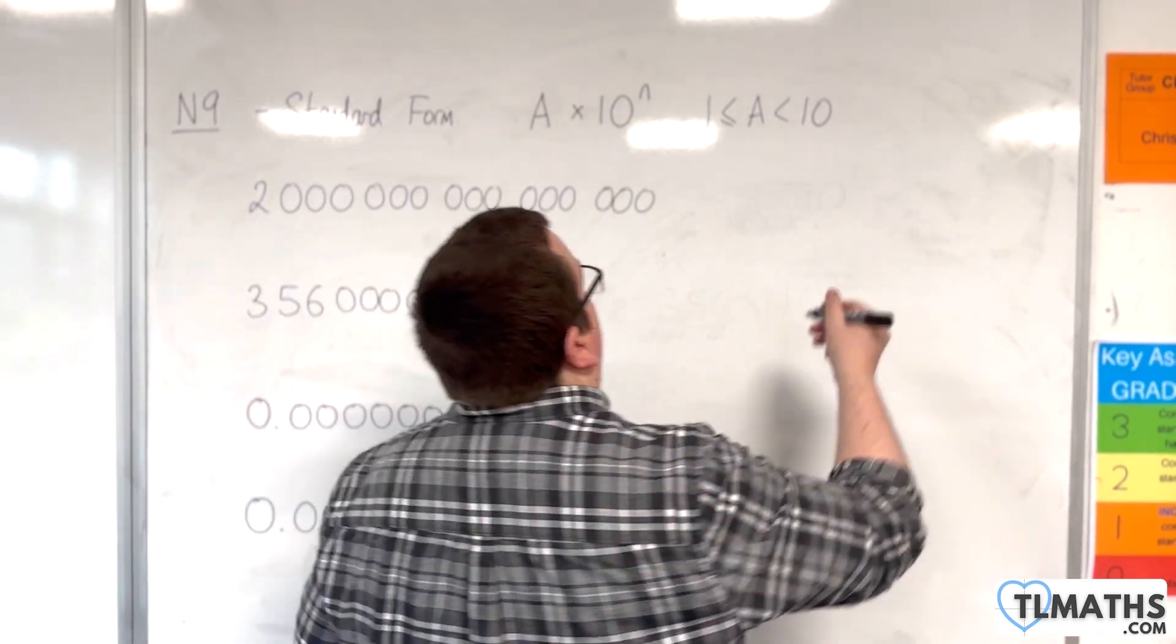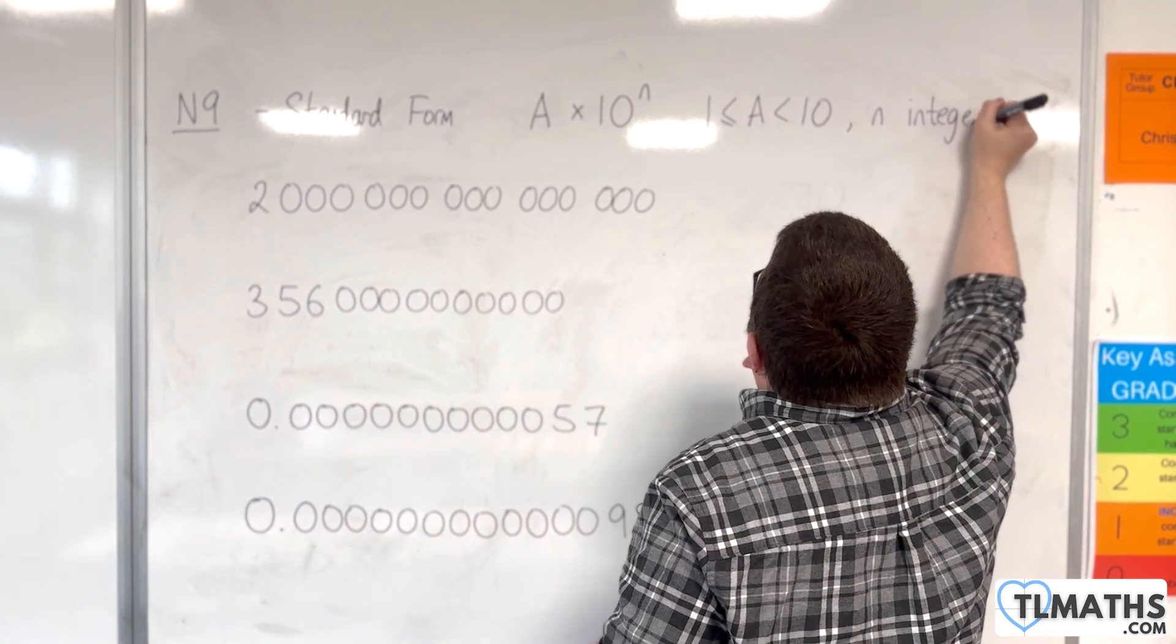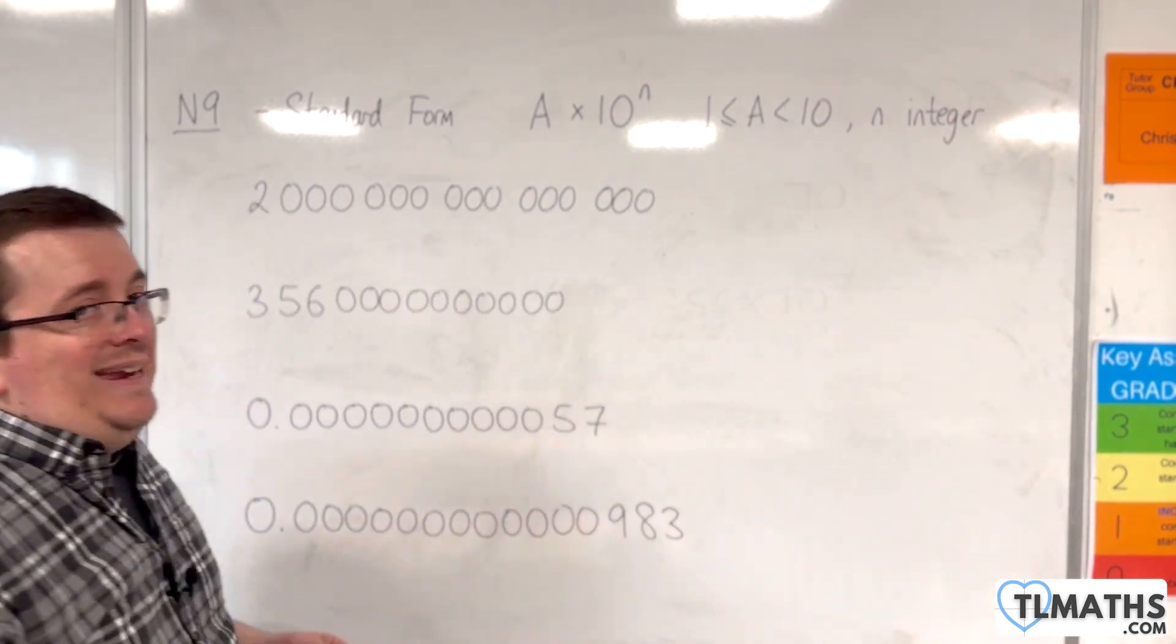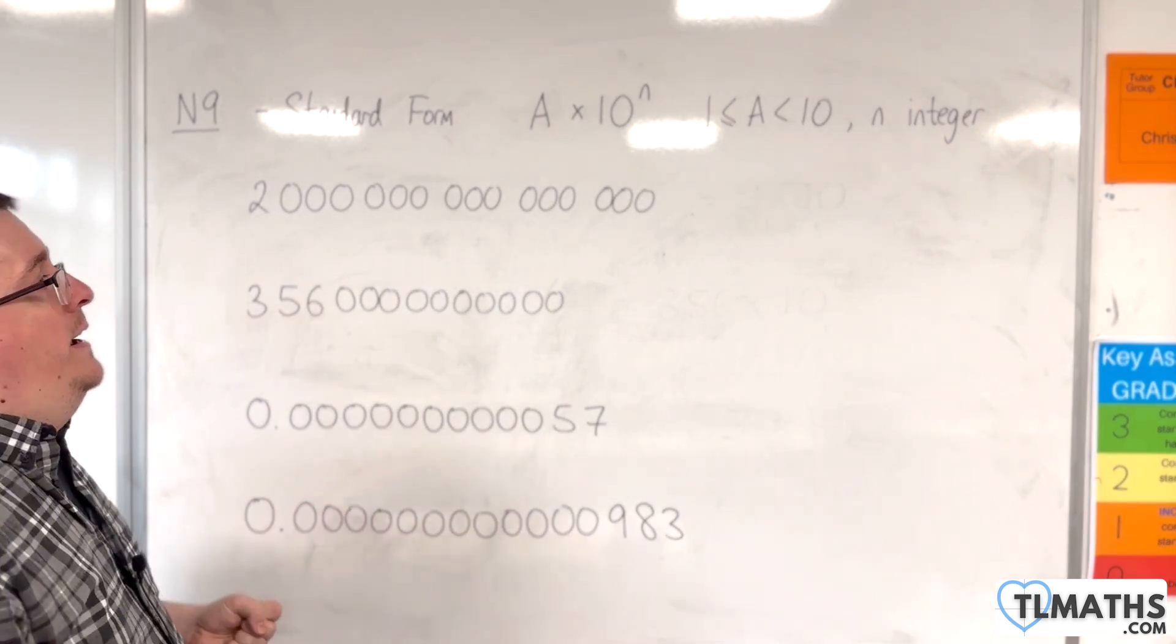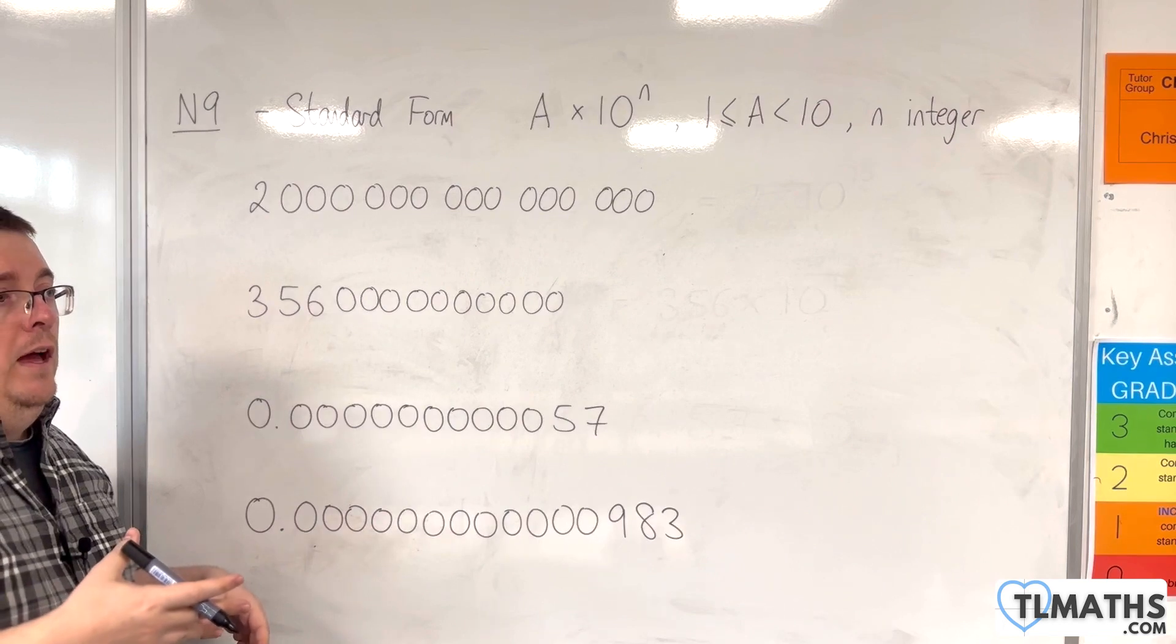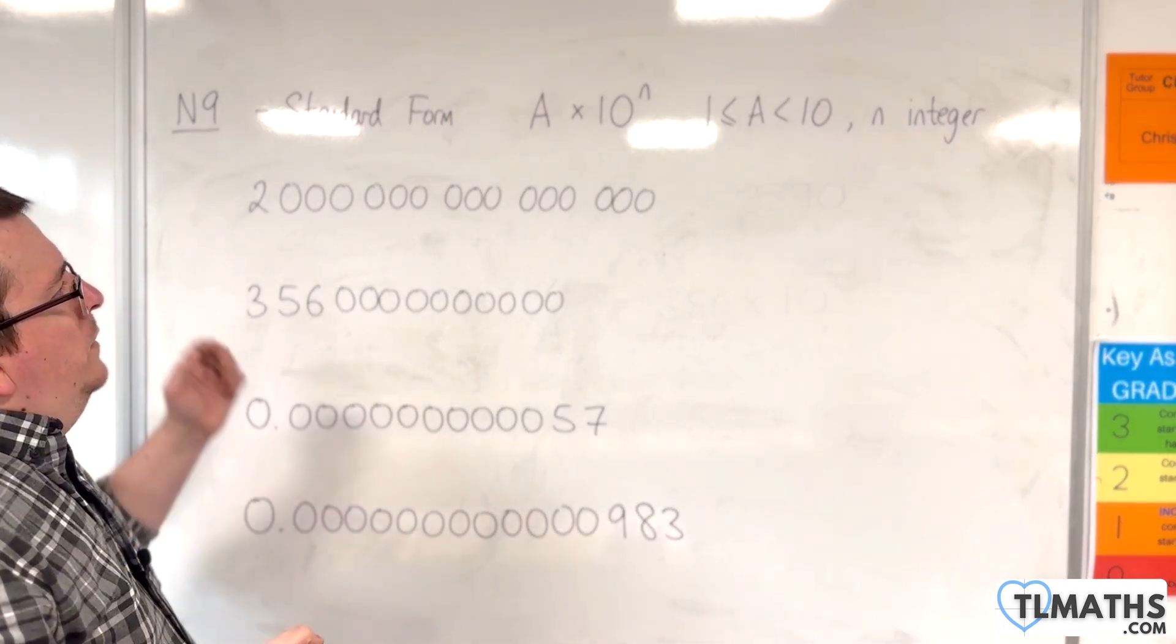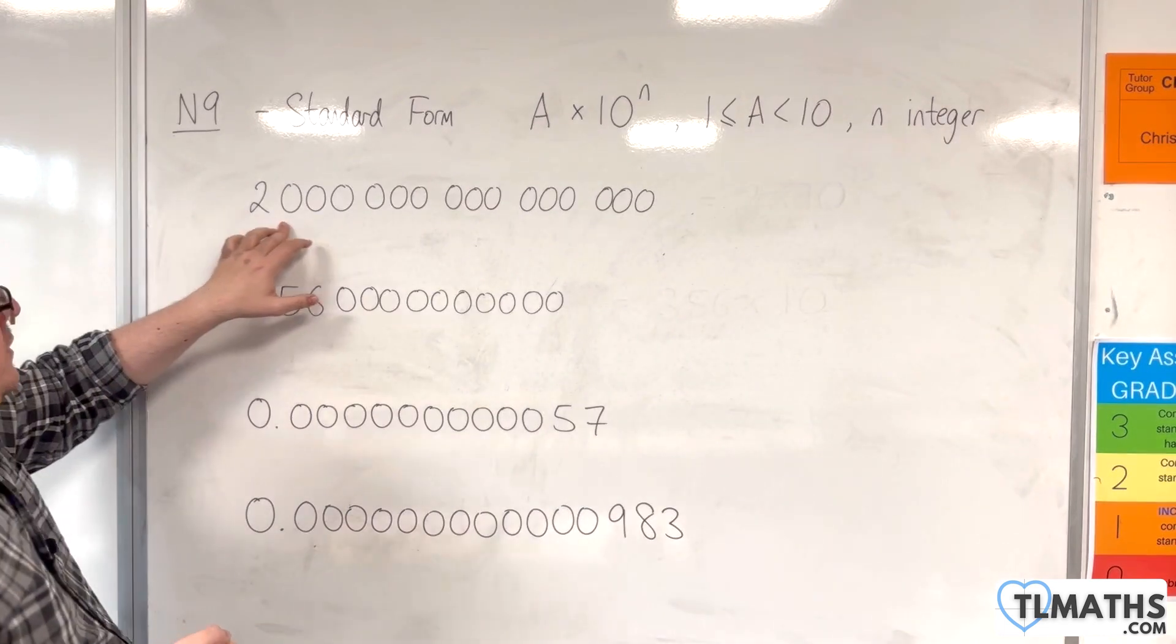And the N is an integer. So it could be 5, it could be 8, it could be 15, it could be 20, it could be minus 3, it could be minus 800.